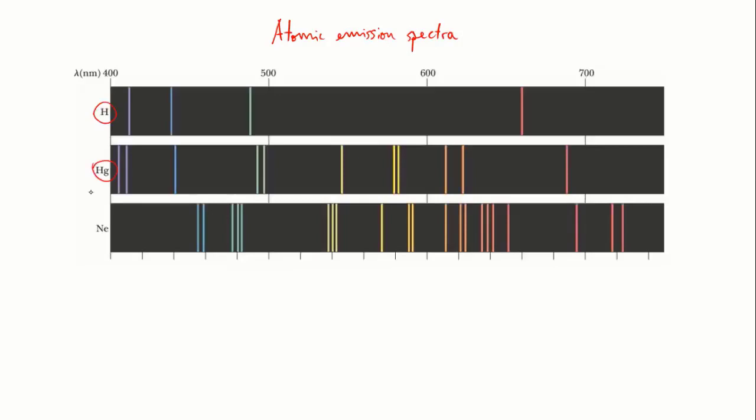These three emission spectra are from hydrogen, mercury and neon, and you can see that each spectrum is quite different and unique to that element, just like a fingerprint that identifies the element.